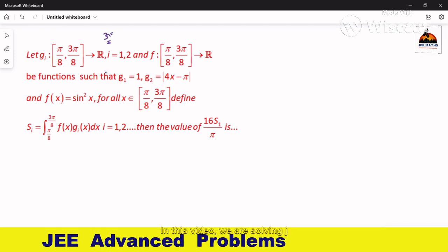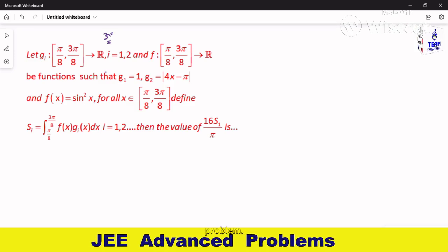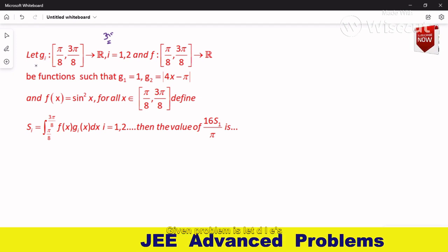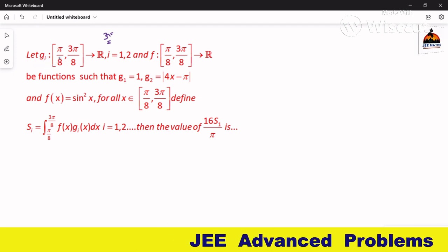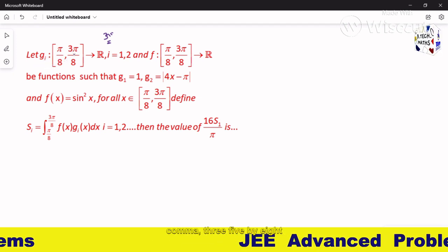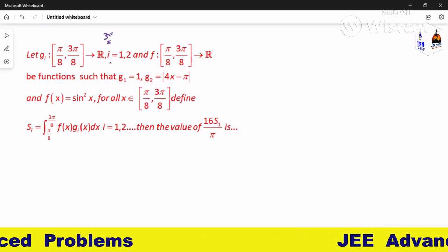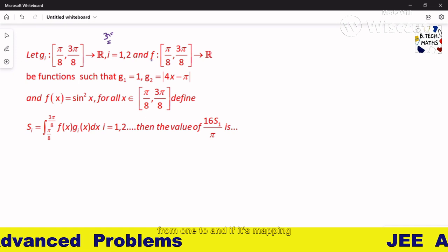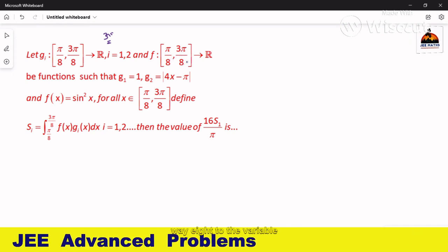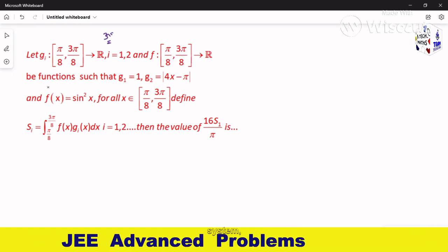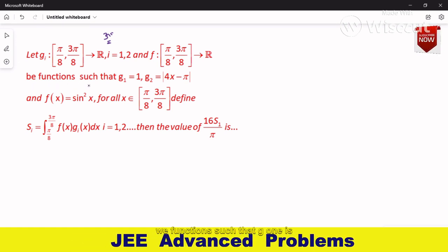Hi friends, in this video we are solving JEE Advanced 2021 problem. The given problem is: let g_i is mapping from π/8, 3π/8 to real number system where i is from 1, 2, and f is mapping from π/8 to 3π/8 to the real number system.